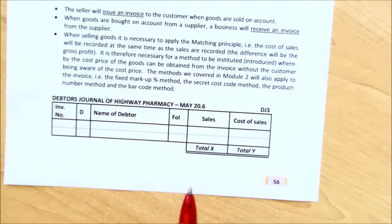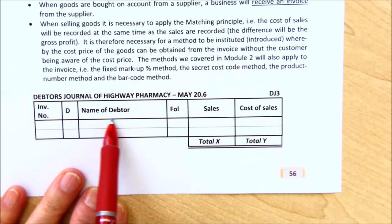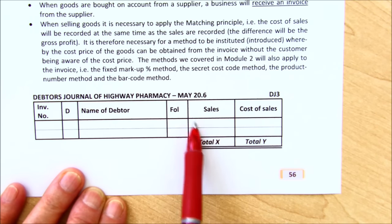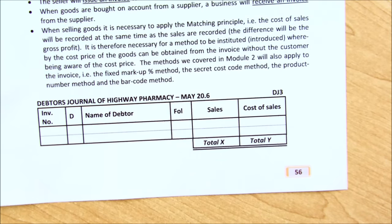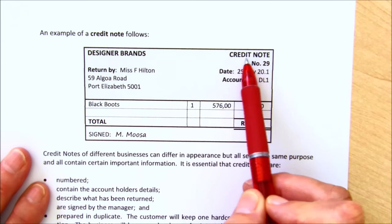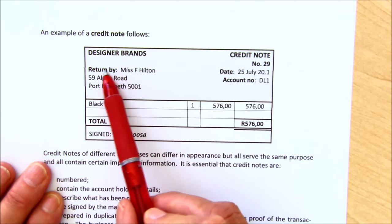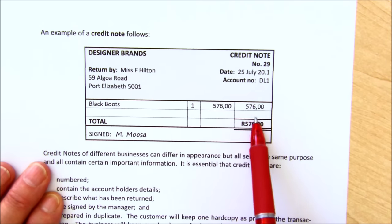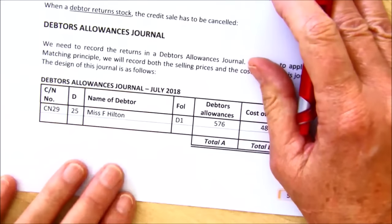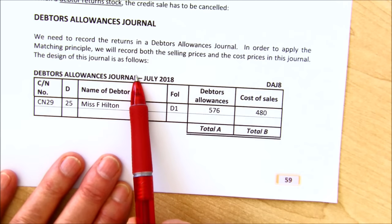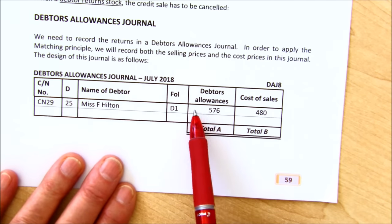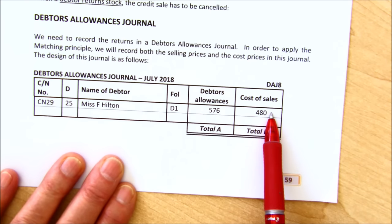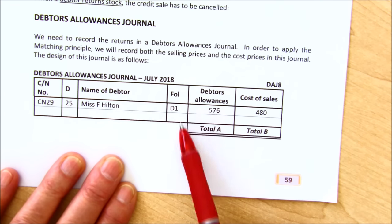A debtors journal records the people that owe us money — the document, who the person is, and just as we learned before, a sales figure and a cost of sales. If any of these debtors return any of the goods, we're not going to refund them because they still owe us the money. We will then issue them with a credit note — and you can see where the name comes from. The credit note records who is returning goods, with their account number, and what they're returning. That credit note is then summarised into a debtors allowances journal. The document records who the person is, the debtors allowances figure, and of course we still have our cost of sales.